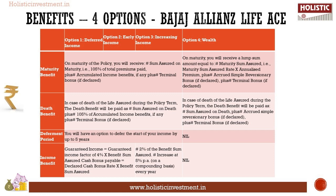Next, we shall discuss the benefits under the four options. First, maturity benefit: for options one, two, and three, the maturity benefit is the same — on maturity you will receive the sum assured on maturity, that is 105% of total premiums paid, plus accumulated income benefits if any, plus terminal bonus if declared. For option four, on maturity you will receive a lump sum equal to the maturity sum assured rate multiplied by annualized premium, plus accrued simple revisionary bonus if declared, plus terminal bonus if declared.